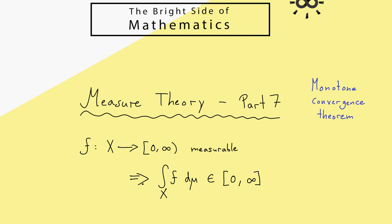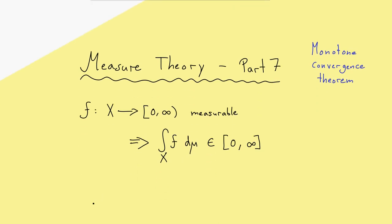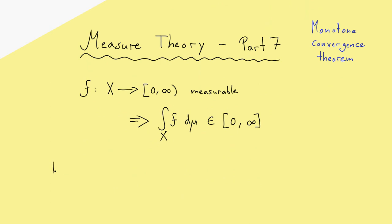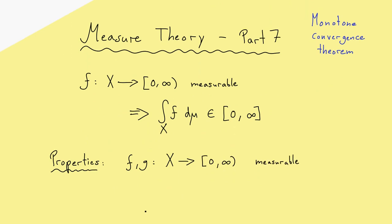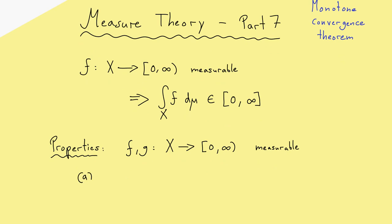Recall this symbol was defined by a supremum over all step functions that lie pointwise below f. Now I want to collect some properties that follow immediately from this definition. So let's choose two of these nice functions, which means they are non-negative and also measurable. The first thing would be: if both functions coincide, then also the integrals coincide. However, of course, this is trivially fulfilled.